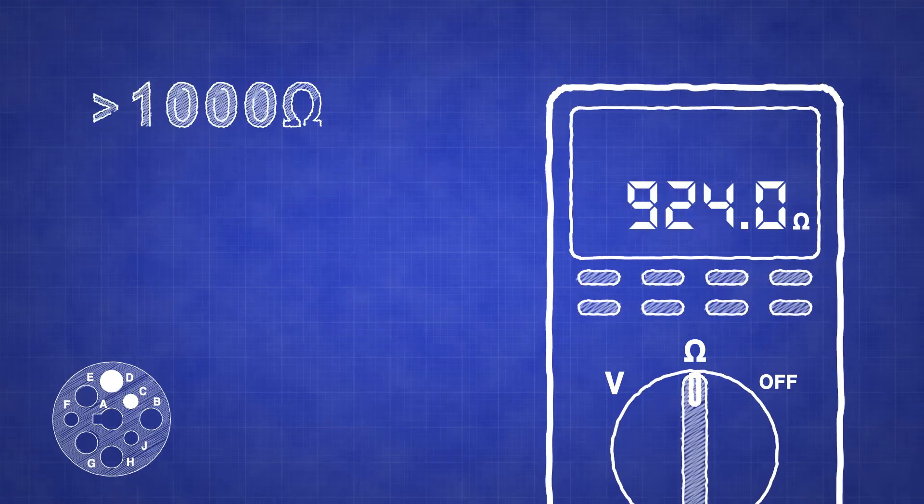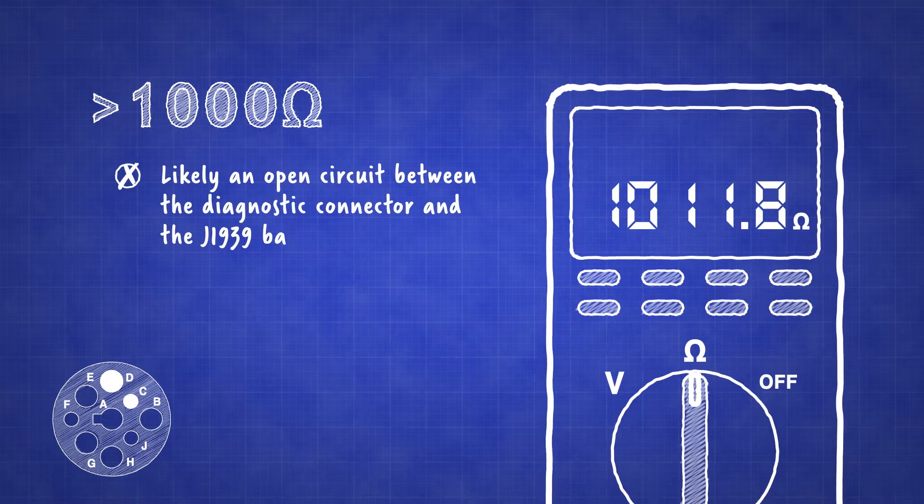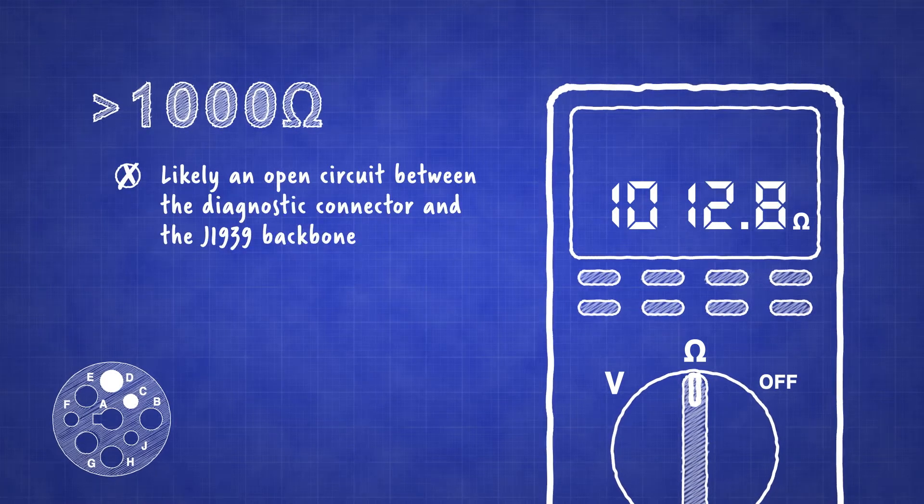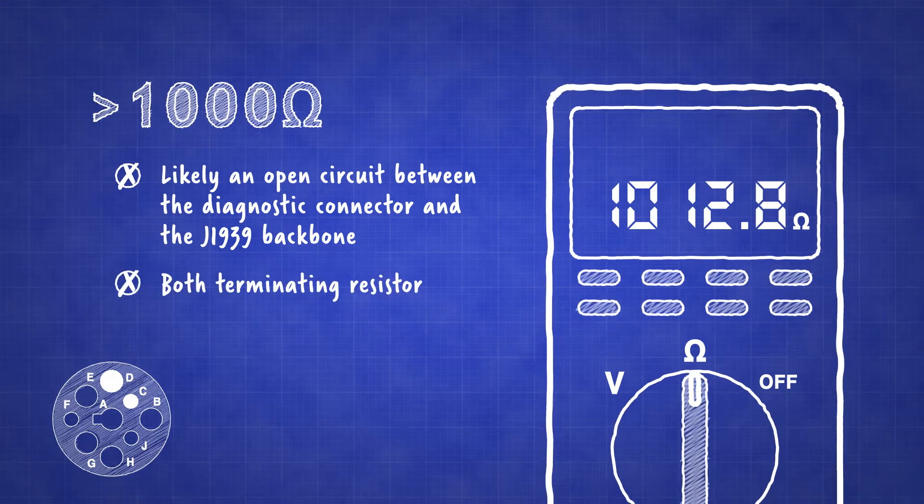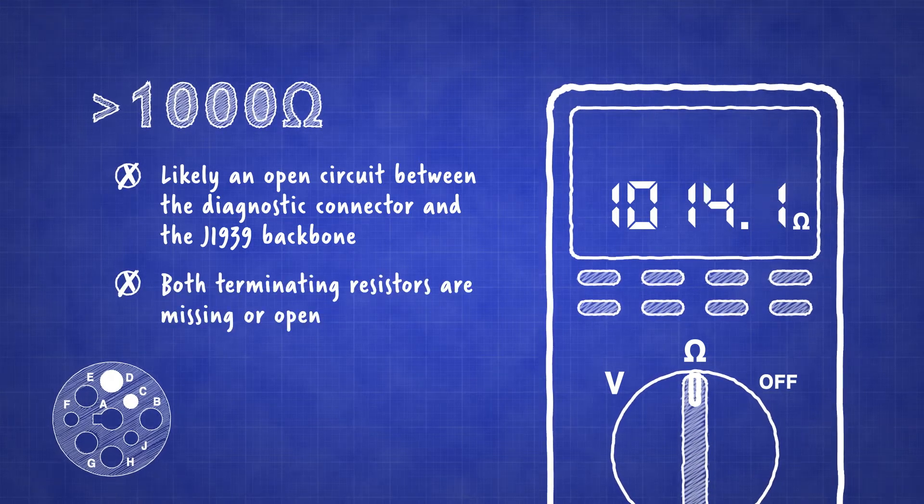If there is a reading greater than 1000 ohms, then there is likely an open circuit between the diagnostic connector and the J1939 backbone. It may also be that both terminating resistors are missing or open.